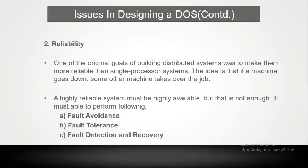The second issue is reliability. One of the original goals of building a distributed system was to make it more reliable than a single processor system. The idea is that if a machine goes down, some other machine takes over the job. A highly reliable system must be highly available, but that is not enough. It must also handle fault awareness, fault tolerance, fault detection, and recovery. These things must be handled by the DOS to be reliable.